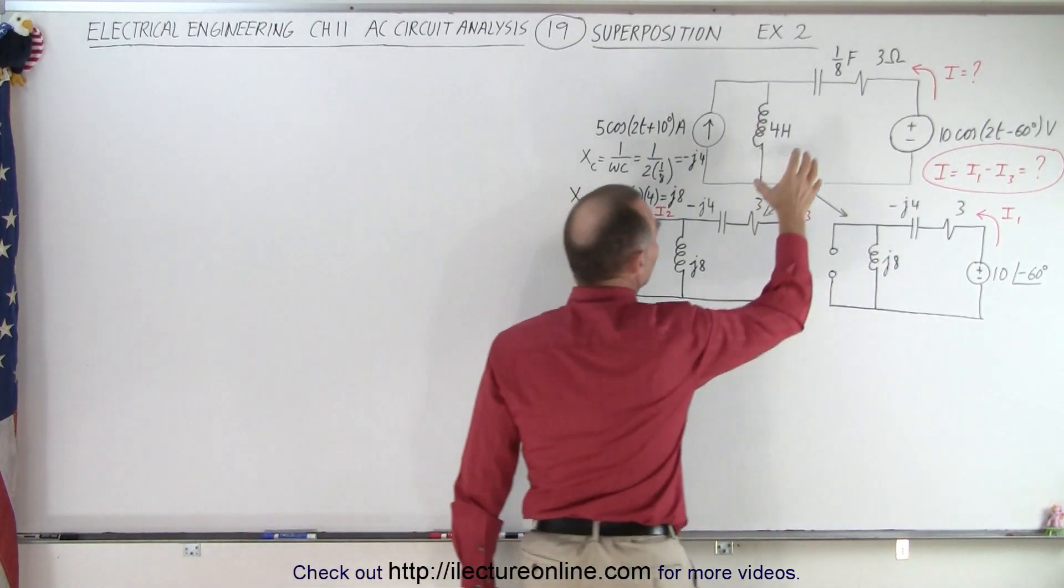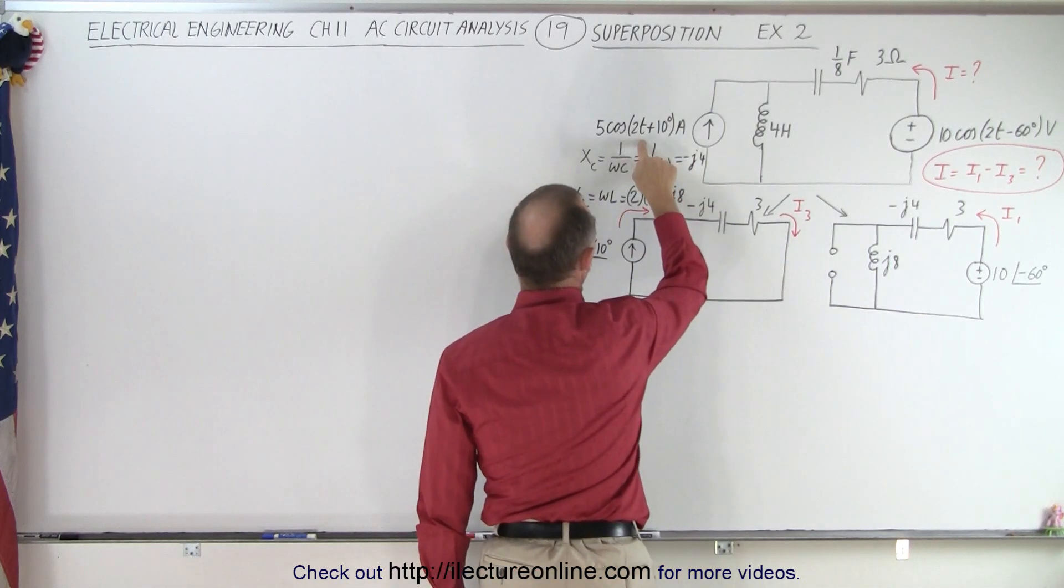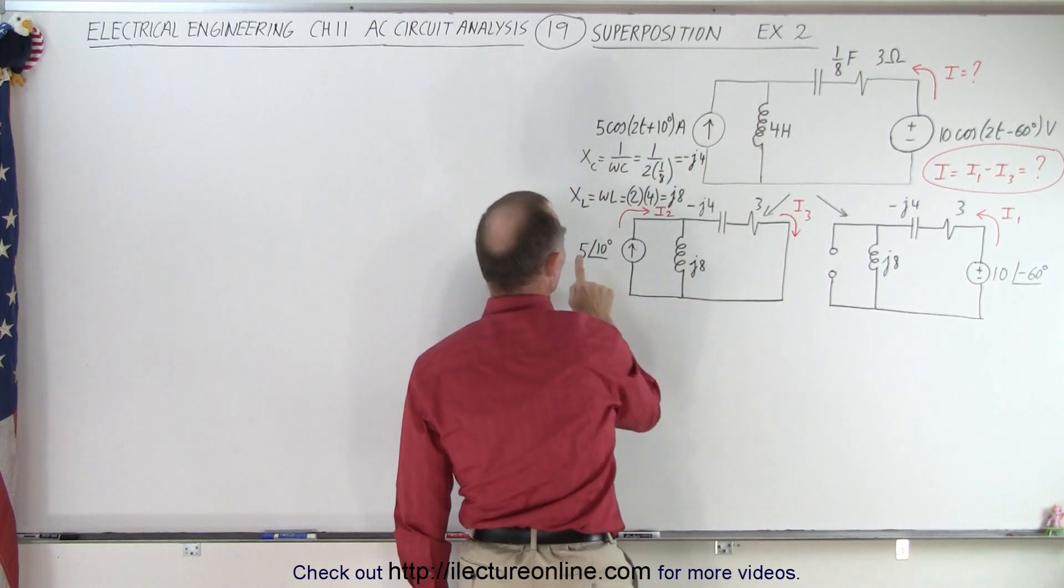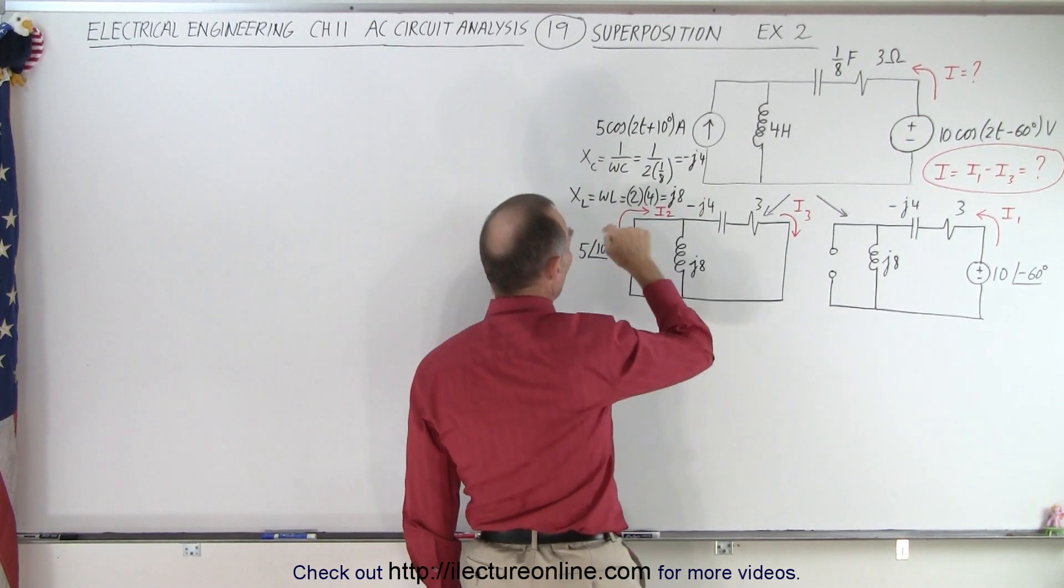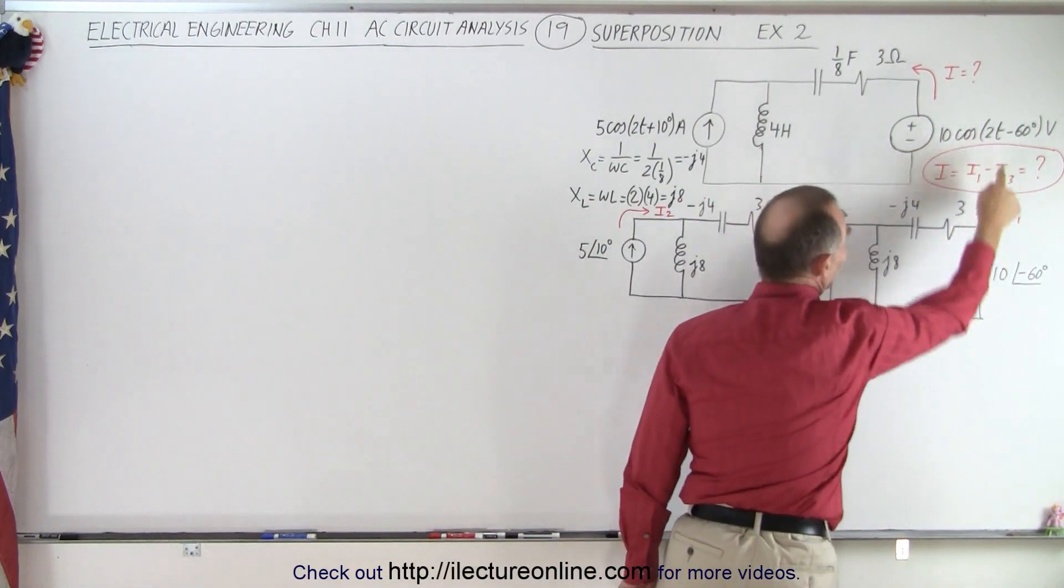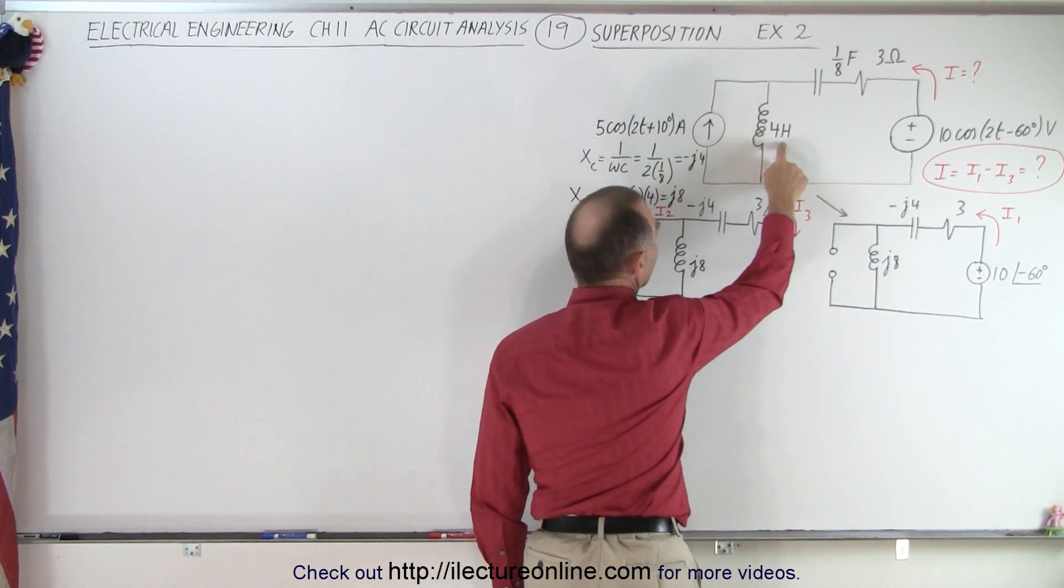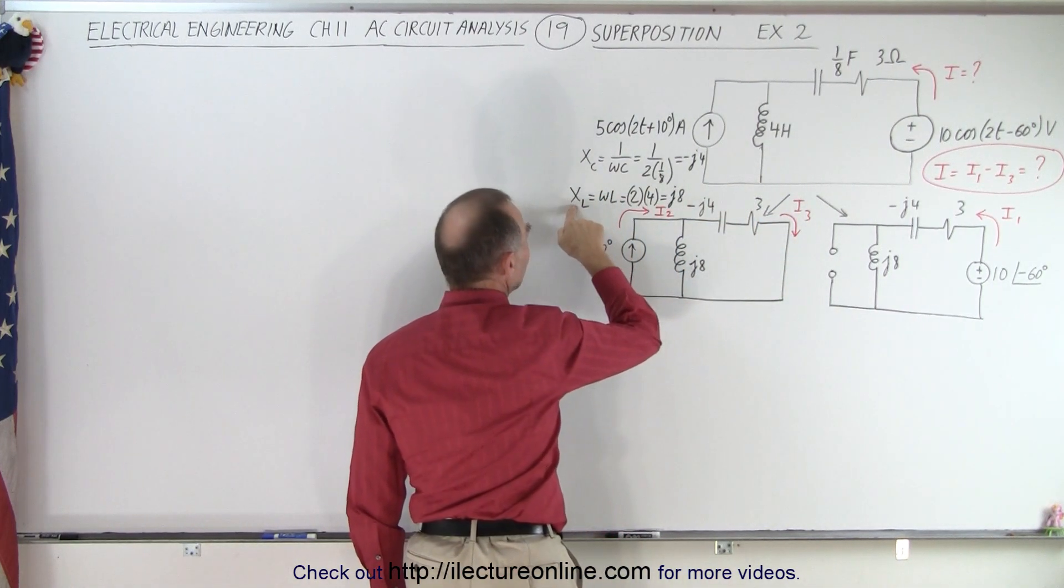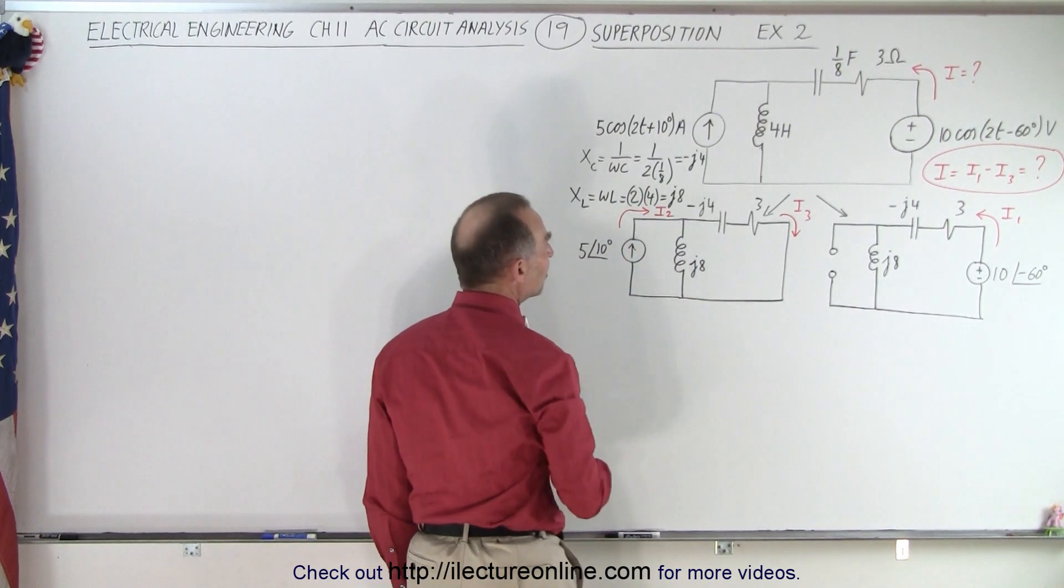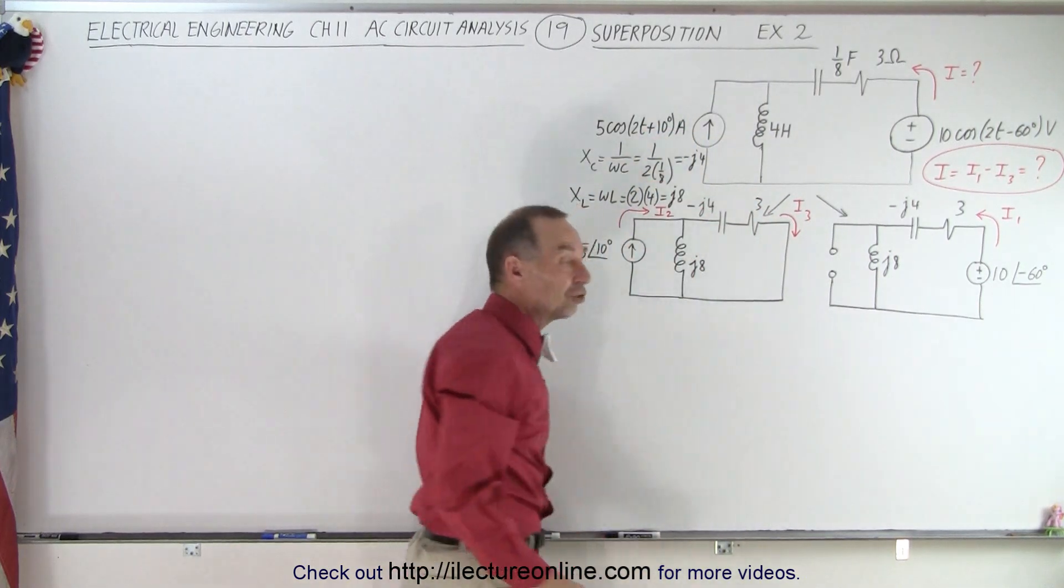We also change from the time domain into the frequency domain. Notice we have a current source of 5 times the cosine of 2t plus 10 degrees, that changes to a voltage of 5 with a phase angle of 10. Omega in this case is 2. Here we have 10 with a phase angle of minus 60. We have a 4 henry inductor, so the inductive reactance is omega times L, 2 times 4 is J8, and for the capacitor it's 1 over omega C, 1 over 2 times 1/8 gives us minus J4.